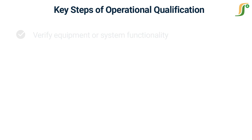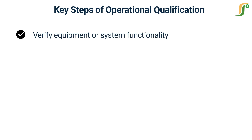Step one: Verify equipment or system functionality. OQ aims to ensure that the equipment or system functions according to its intended design and operational specifications. This involves verifying that all components and subsystems of the equipment or system are installed, calibrated, and functioning correctly in that they meet predefined acceptance criteria.